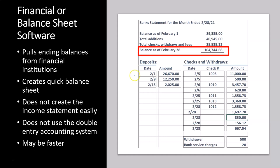In that case, what you're doing instead of compiling data using the double-entry accounting system is just taking the ending balance. That's great — it's easy to make a balance sheet that way. But you don't have that same kind of detail. In QuickBooks or accounting software, you can double-click, drill down, and see exactly what the accounts were made of. You can see the detail.